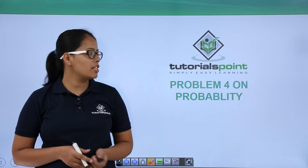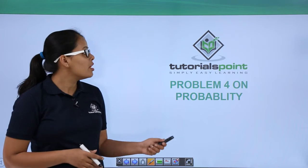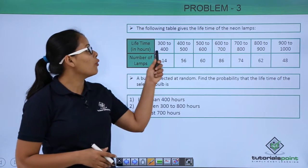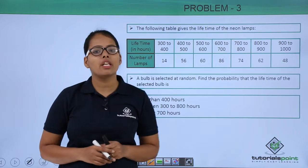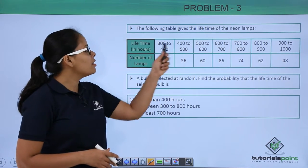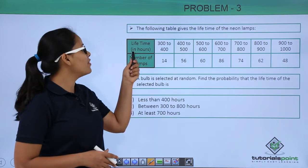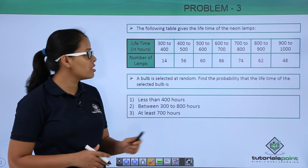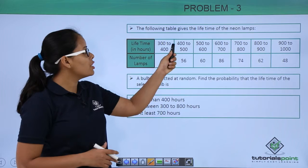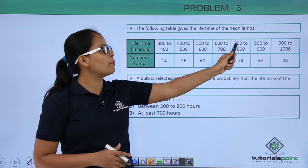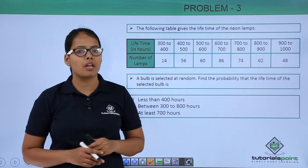Hey guys, let's discuss this problem on probability. This problem says the following table gives the lifetime of the neon lamps. This table represents the lifetime of neon lamps in hours, from 300 to 400 hours, 400 to 500 hours, and so on up to 900 to 1000 hours.